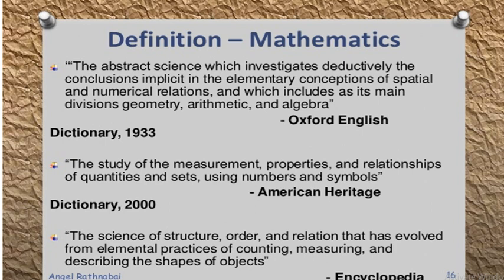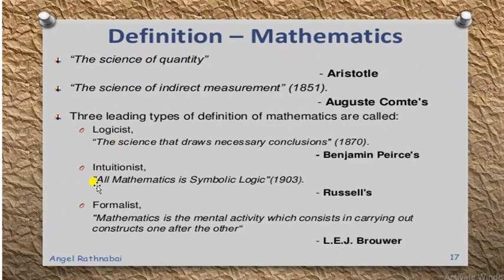This encyclopedia definition focuses on the idea that mathematics is all about structure, order, and relation, and these three things evolve from the practices of counting, measuring, and describing the shapes of objects. The basic foundation stones of mathematics are counting, measuring, and describing different objects' shapes. Mathematics as defined by Aristotle, in simple words, is 'the science of quantity.' Auguste Combs defined it as 'the science of indirect measurement.'